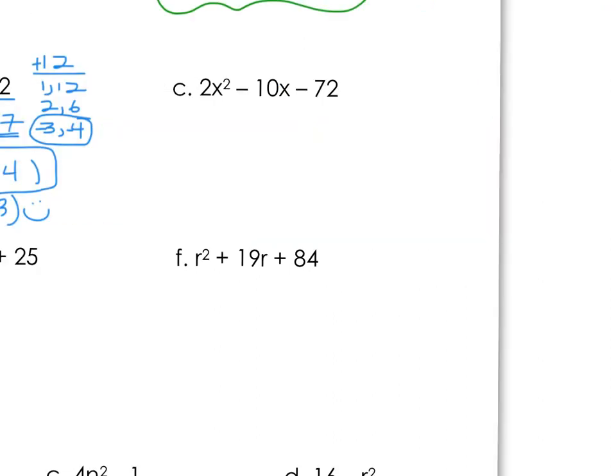Now example C throws a little bit of a zinger in here at us. We've got 2x² - 10x - 72. The trouble with this one is that our a value isn't 1, it's 2. But if I look at each term, notice something unique about a, b, and c. We have a common factor here. And any time you have a common factor, we have to deal with that first.